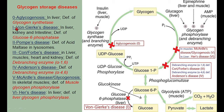Von Gierke's disease is glycogen storage disease type 1, affecting liver, intestine, and kidney. It is due to deficiency of glucose-6-phosphatase, so glucose-6-phosphate cannot be converted back to glucose. Pompe disease is type 2 — it occurs in the lysosome due to deficiency of acid maltase. Acid maltase handles glycogen metabolism in lysosomes and is not part of the normal cytoplasmic glycogen-glucose cycle.